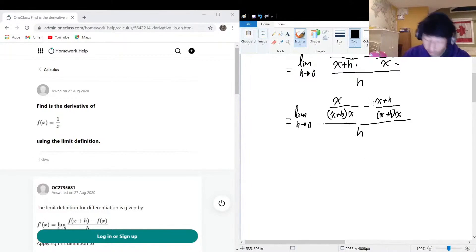Like this: limit as h approaches zero of x minus x plus h all over x plus h multiplied by x, all over h.